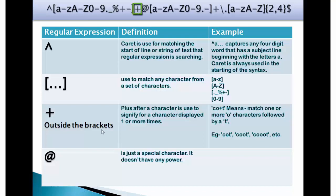Plus outside the brackets. Its definition is plus after a character is used to signify for a character displayed one or more times. For example, CO plus T means it matches one or more O characters followed by a T. COT is one example, COOT is another example, then COOOT can also be an example.